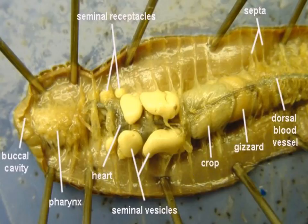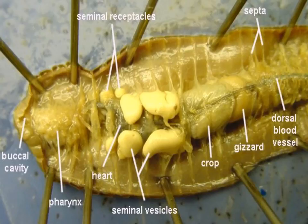The female reproductive structures consist of the ovaries in the segment 13 area, leading to the openings of the oviduct — again, not visible in this diagram. Finally, you would see two pairs of seminal receptacles located in segments 9 and 10.